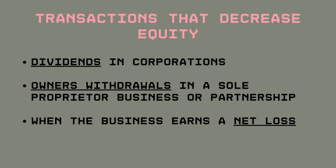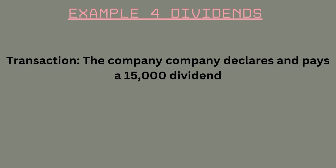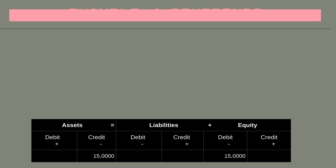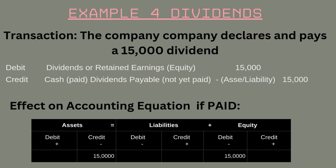Other types of transactions cause equity to decrease. These include dividends, owners' withdrawals, and net losses. If a company declares and pays dividends to shareholders, this decreases equity through a debit to the retained earnings account. For example, if the company declares and pays a $15,000 dividend, you record a debit to retained earnings for $15,000 and credit cash or dividends payable for $15,000, depending on the timing of the payment. Equity is reduced by the $15,000 dividend amount.